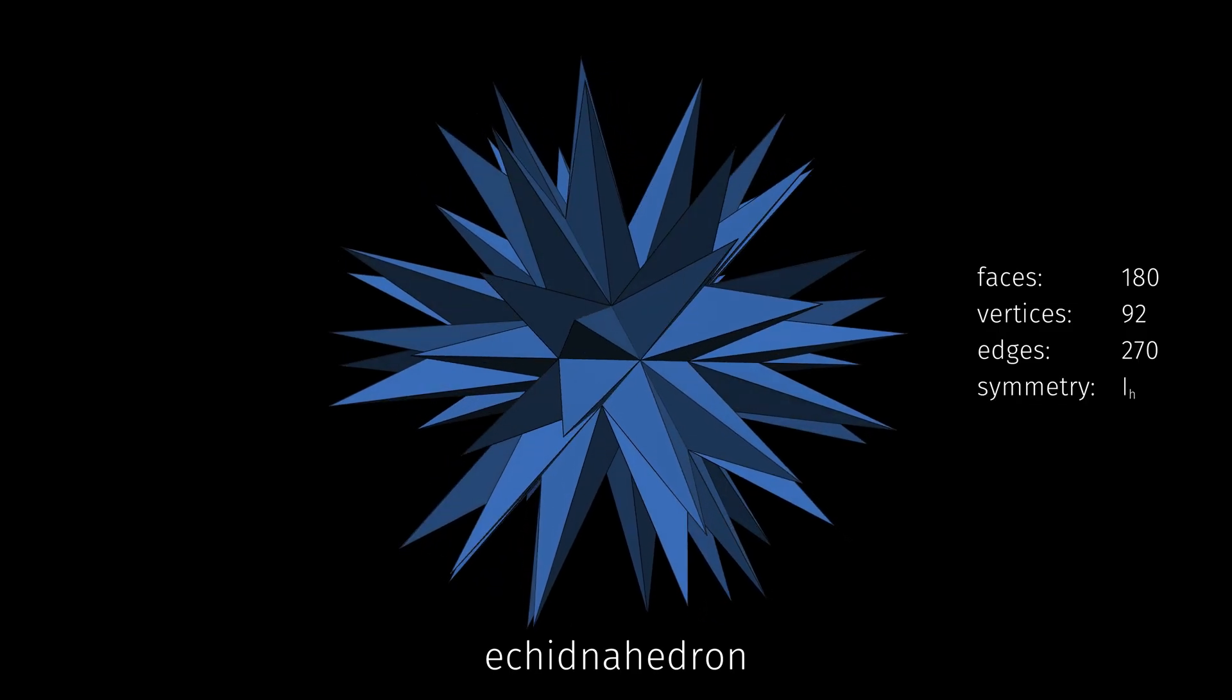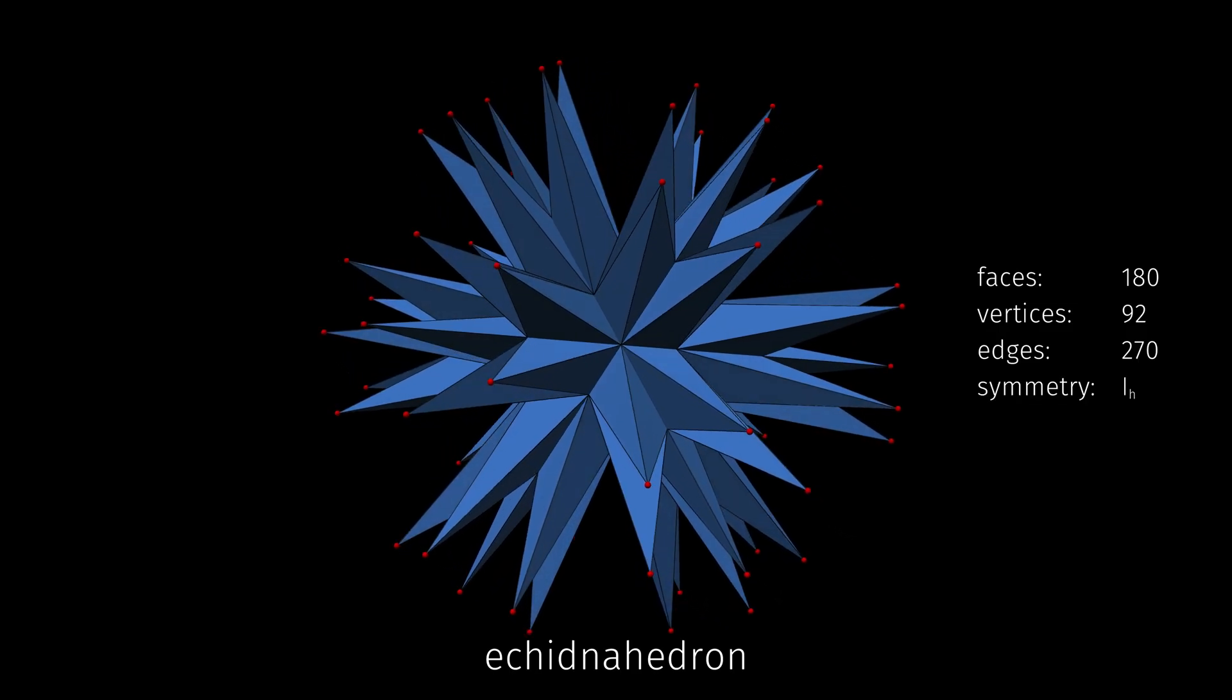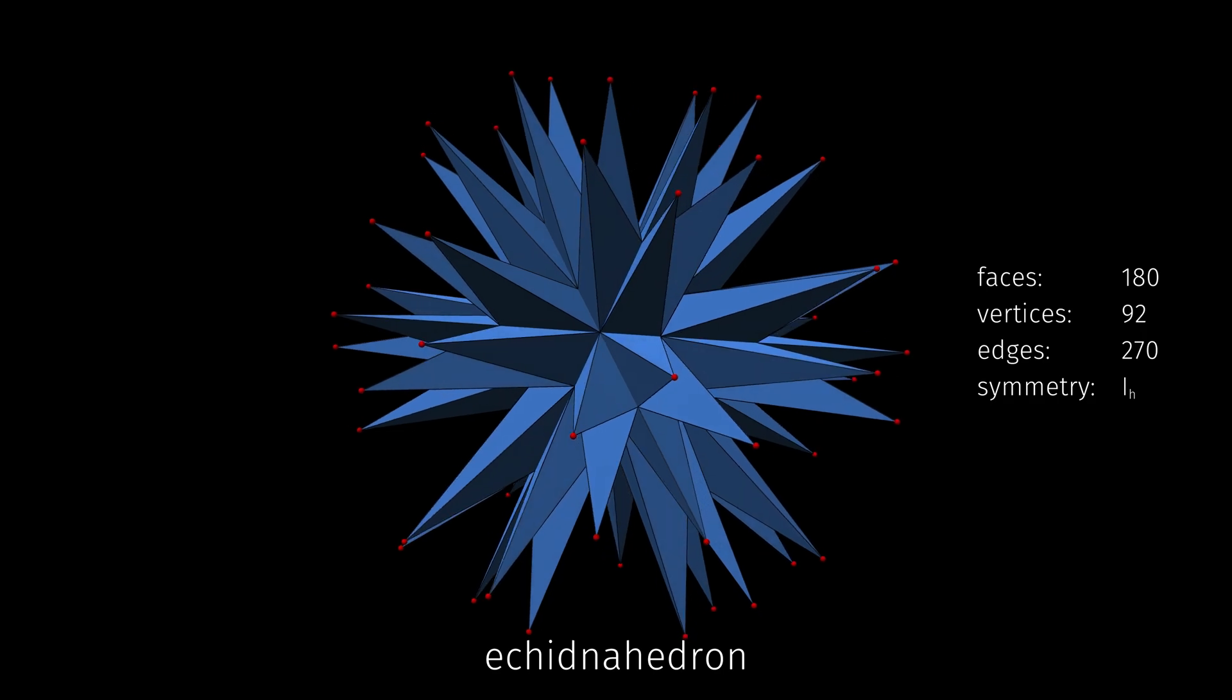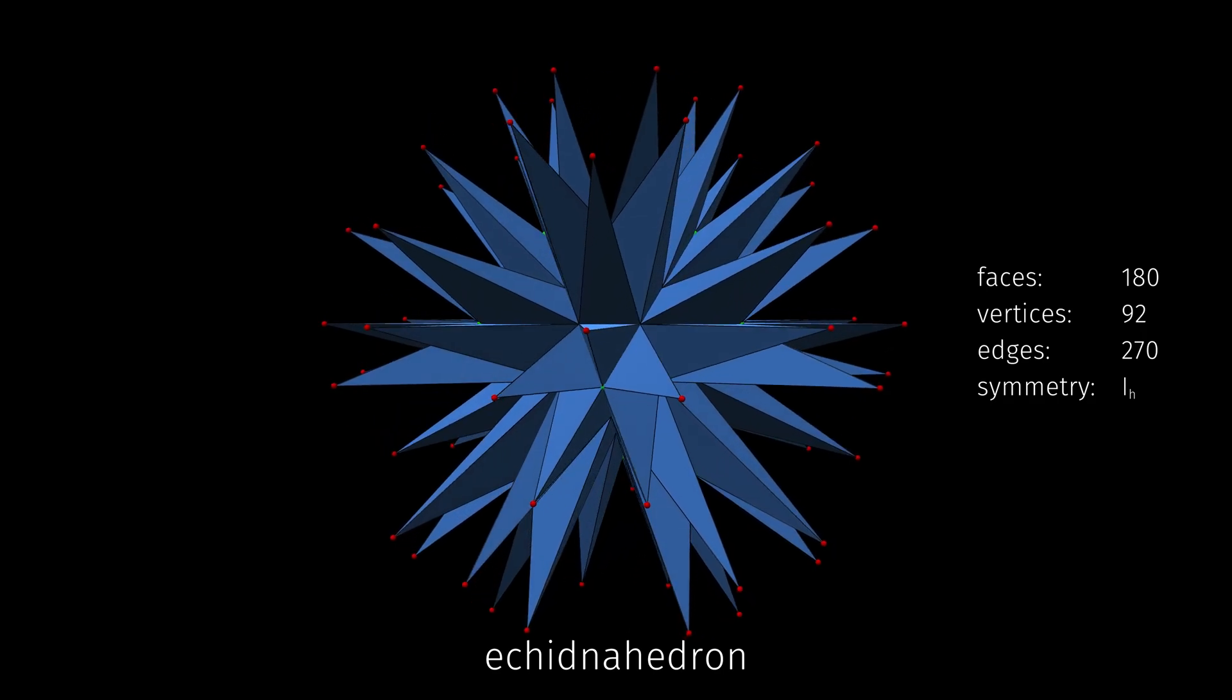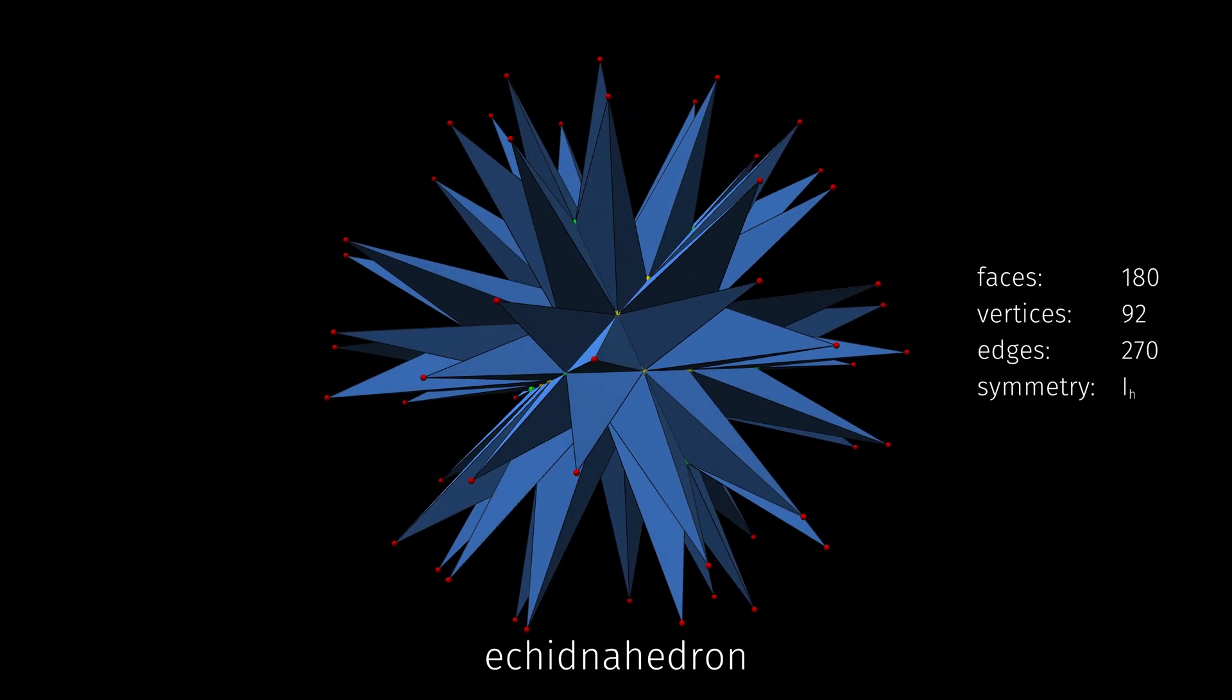There are 60 sharp spiky vertices that come in groups of five. 12 more vertices nestle between the groups of five, and 20 more buried even deeper.